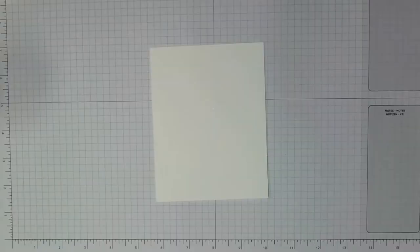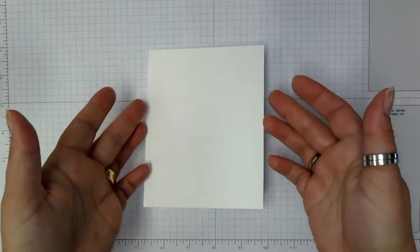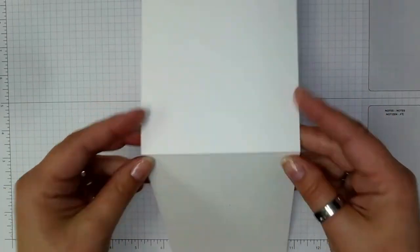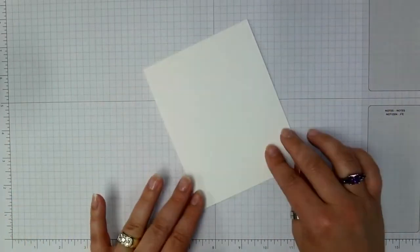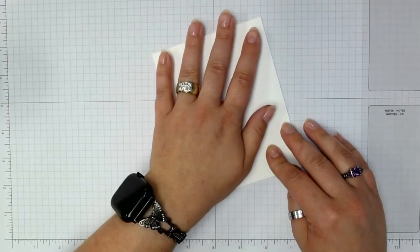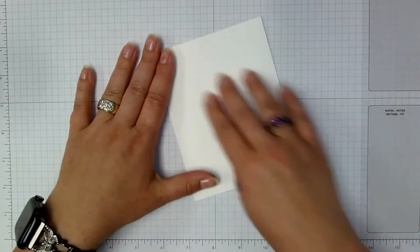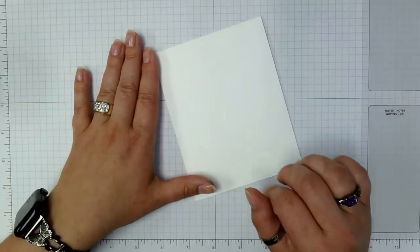All right, let me flip over to my desktop. So I'm just starting with a basic white, this is the thick cardstock. It's cut 11 inches by four and a quarter inches and I scored it at five and a half inches.